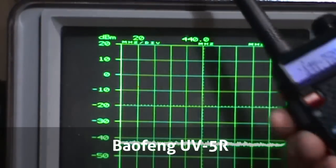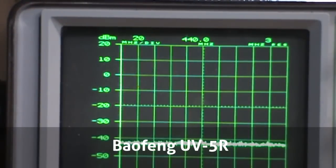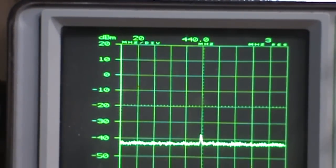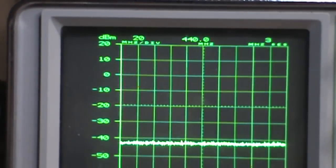Next is our UV5R Baofeng. Yep, and there you go. Looks like we do have a spur there as well. Yeah, negative 35 dB. So I think that's going to be just about, that may be in spec. I'll have to double check on the math.